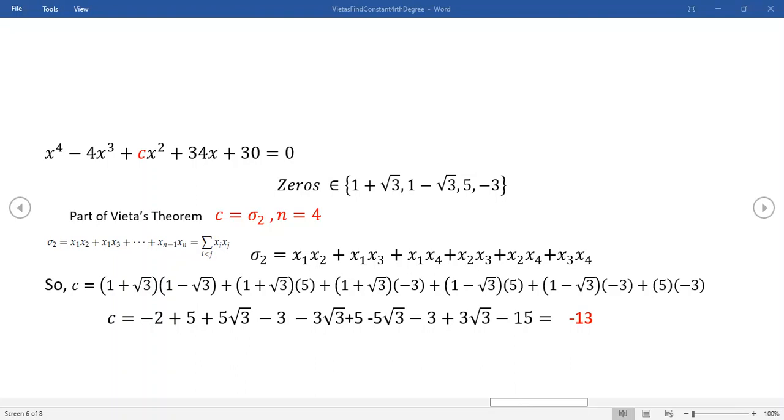Now, this one more or less just checks to see if you know what the formulas mean. The Olympiad problems are probably a level more difficult. Here, and this doesn't happen very often in Math Olympiads, I actually give you the zeros, all four of them: one plus root three, one minus root three, five, and negative three. So we have two irrational zeros and two integer zeros.